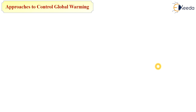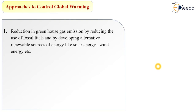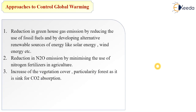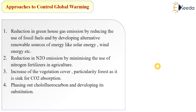The approaches to control global warming include: reduction in greenhouse gas emissions by reducing the use of fossil fuels and developing alternative renewable sources of energy like solar energy and wind energy. Reduction in nitrous oxide emissions by minimizing the use of nitrogen fertilizers in agriculture. Increase of vegetation cover, particularly forests, as they act as sinks for carbon dioxide absorption. Phasing out chlorofluorocarbons and developing substitutes, and trapping and using methane as fuel.